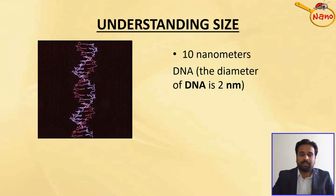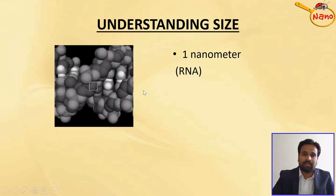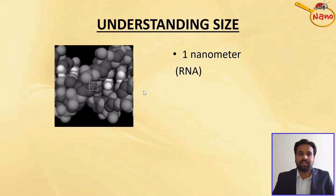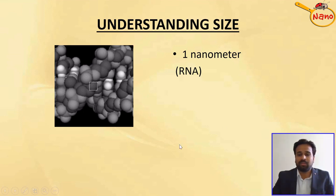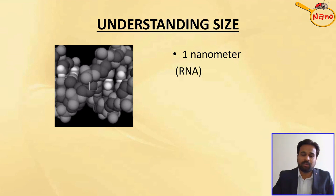Further zooming up to 10 nanometers, we can see the DNA structure, whose diameter is approximately 2 nanometers and length is approximately 10 nanometers. After going to 1 nanometer, we can see structures inside the DNA, such as nucleic acids and RNA. This is the nanometric scale. To imagine how small a nanometer is: if you consider a football in front of the Earth, then the football is to the Earth as a nanometer is to a meter.